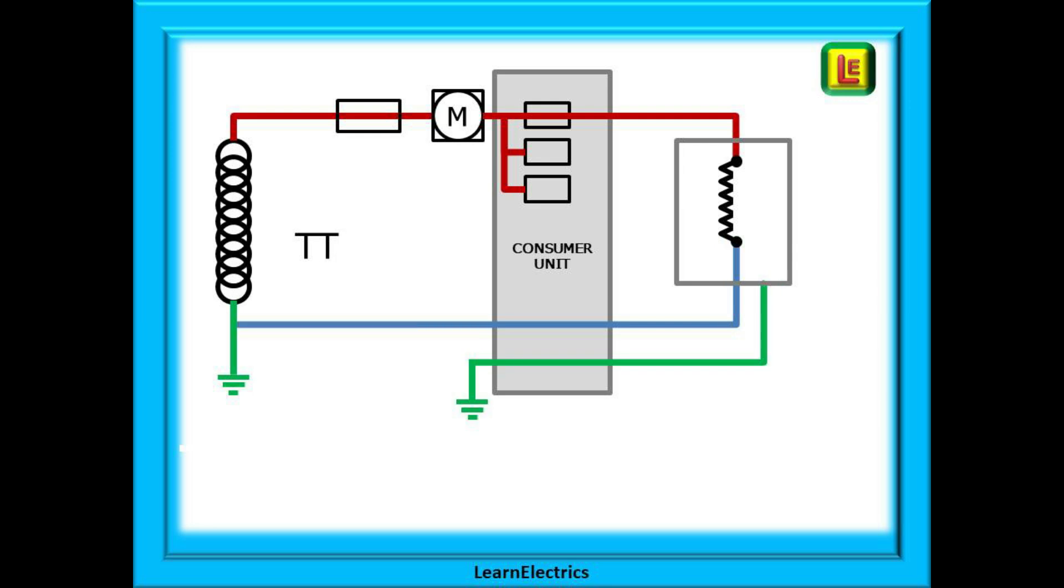And lastly there is the TT system. An earth rod is installed by the supply company at their transformer and the customer must provide their own earth rod at their premises. There is no copper connection between the two earth rods, just the soil.